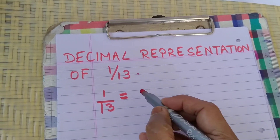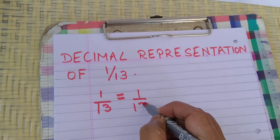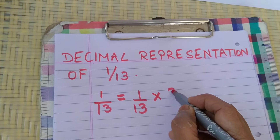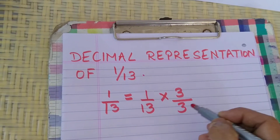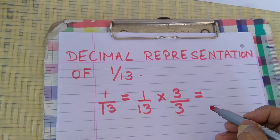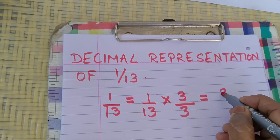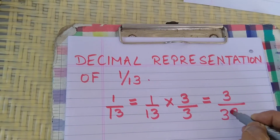Now here what we do is we multiply and divide by 3, because in the unit's digit we need 9. So this becomes 3 by 39.